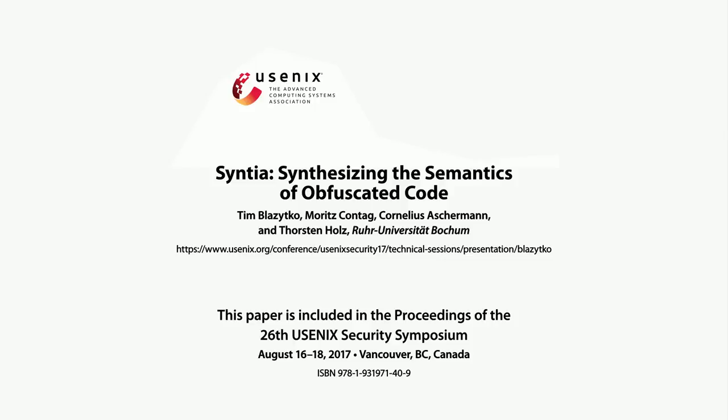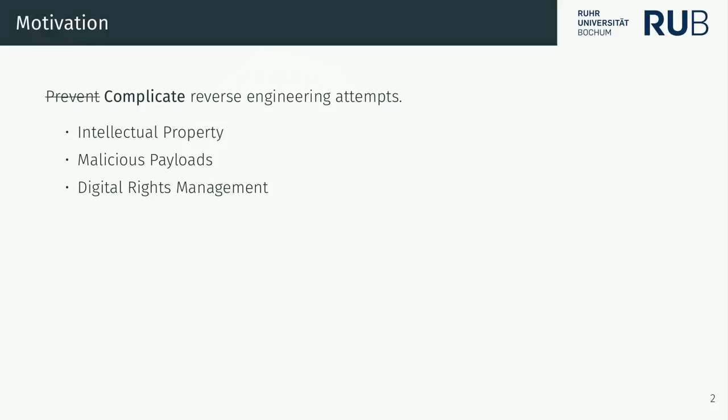First things first — why do we want to obfuscate code? It's important to note that we cannot really prevent reverse engineering attempts, but rather we seek to complicate them. One reason is intellectual property protection: if you have a super-secret algorithm that gives you a competitive advantage, you can protect it and maintain a head start over competitors.